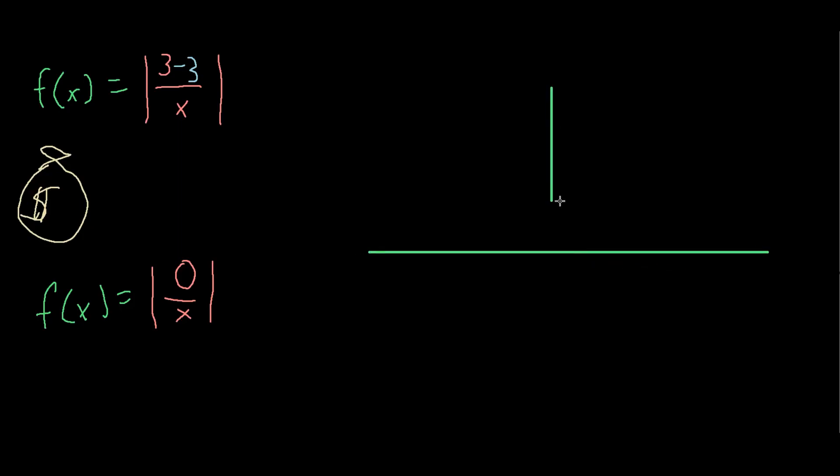That changes the equation to f of x equals the absolute value of 0 over x. And if we draw this graph, you can see the estimated time of arrival of your dad is always zero no matter where he is.